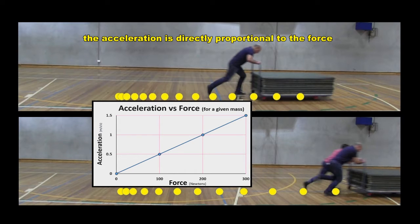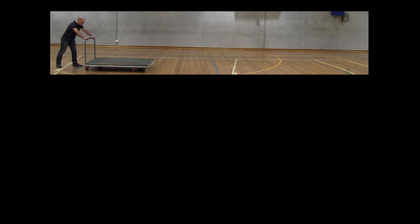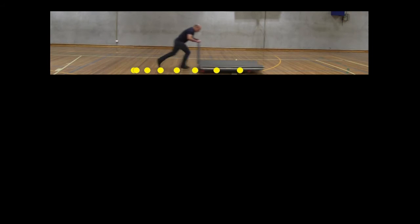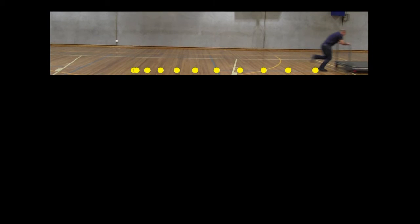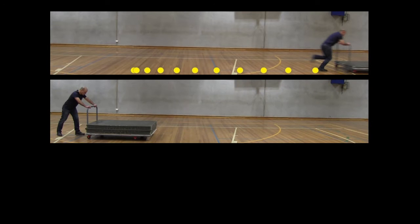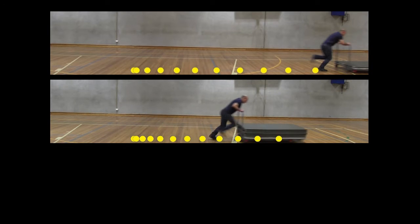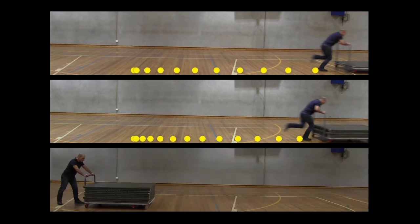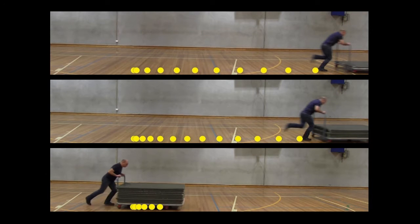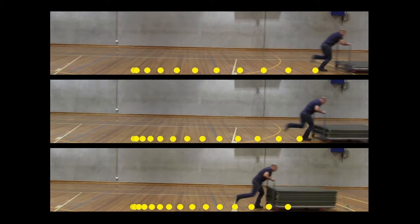If you increase the force by 20%, the object's acceleration will increase by 20%. Now, what happens if we keep the force the same, but vary the mass? When the trolley has only one green mat on it, I can accelerate it fairly quickly. If I increase its mass by loading more mats onto it, and then apply the same force, the acceleration is a lot smaller. Increasing the mass again results in an even smaller acceleration.